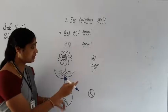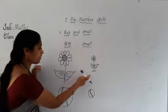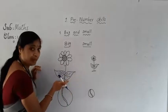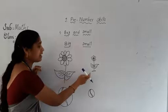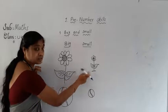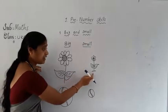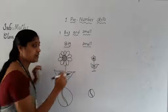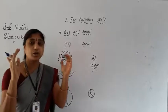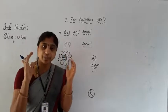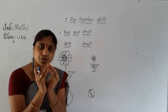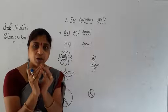When compare the flowers, this flower is the big flower. And compare this flower to here, this one is the smaller. Means big and small.